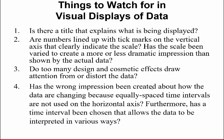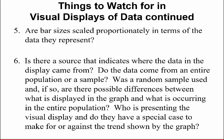Things to watch for in visual displays of data. Is there a title that explains what is being displayed? Are numbers lined up with tick marks on the vertical axis to clearly indicate the scale? Has the scale been varied to create a more or less dramatic impression than shown by the actual data? Do too many design and cosmetic effects draw attention away from or distort the data? Has the wrong impression been created about how the data are changing because equally spaced time intervals are not used on the horizontal axis? Furthermore, has the time interval been chosen that allows the data to be interpreted in various ways? Are bar sizes scaled proportionately in terms of the data they represent? And is there a source that indicates where the data came from?